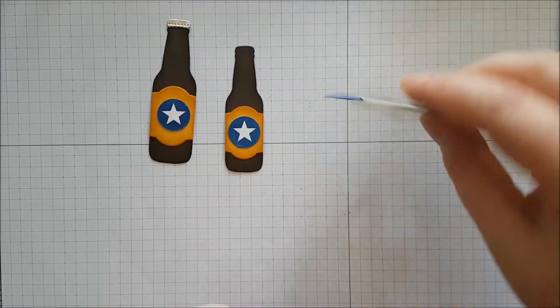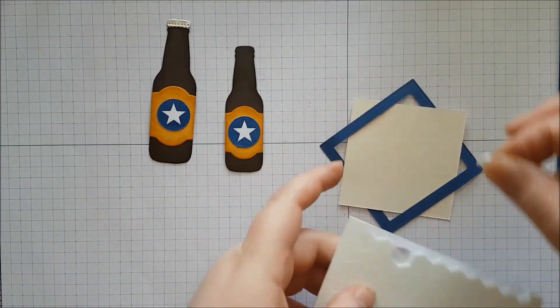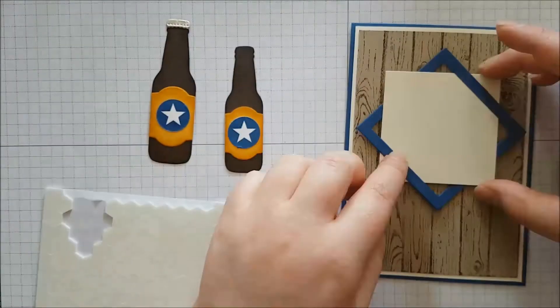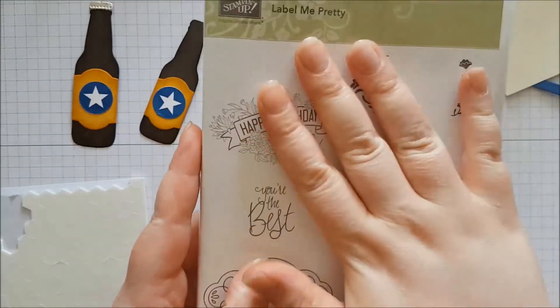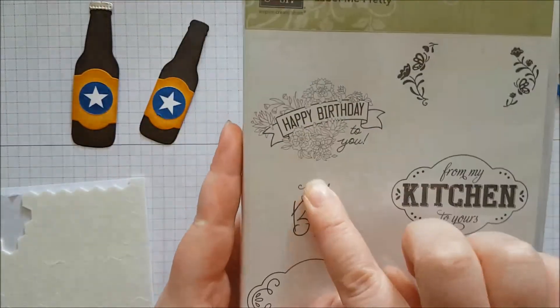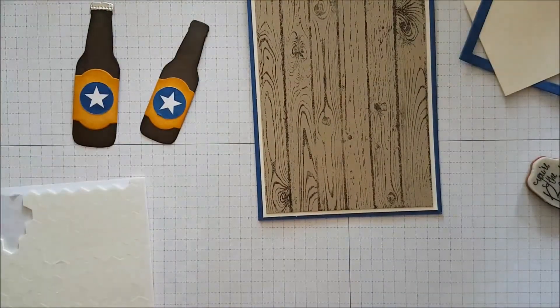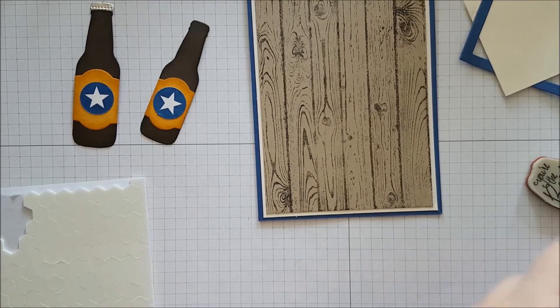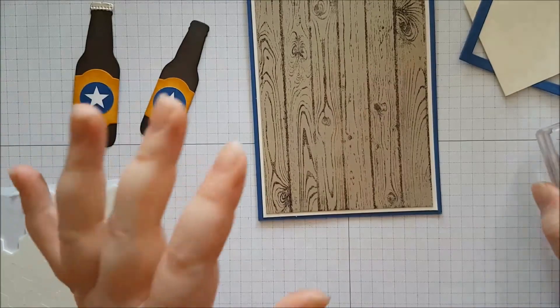And then this is going to get raised with some dimensionals, which I've lost. Here we go. So that will go there like that. I actually totally forgot to mention, you will need the You're the Best sentiment from the Label Me Pretty stamp set. I've just used this for a workshop, so it came away from the pile for all the goodies for this. Let's get that on this block for now. I know this block is way too big, but it's to hand.